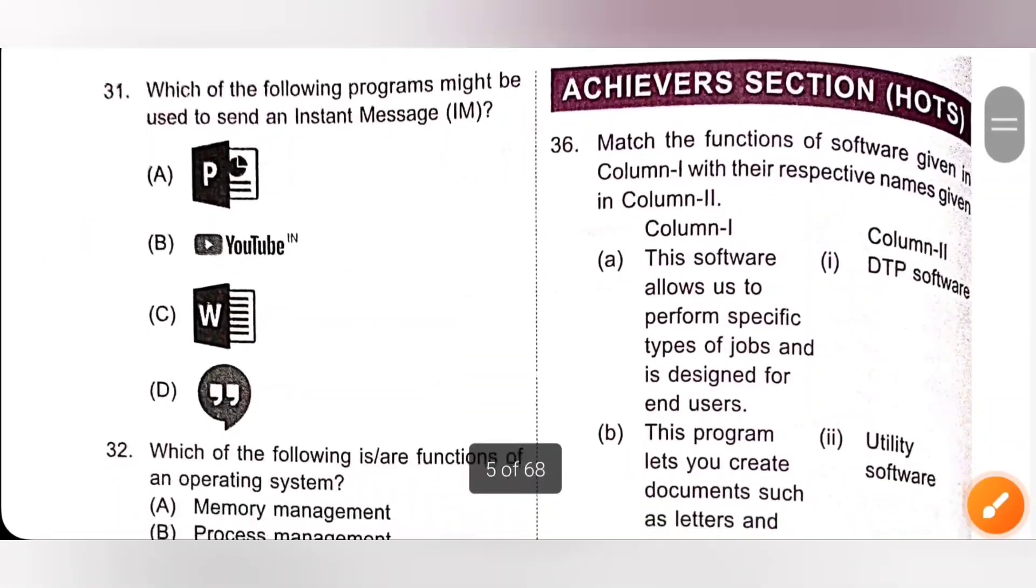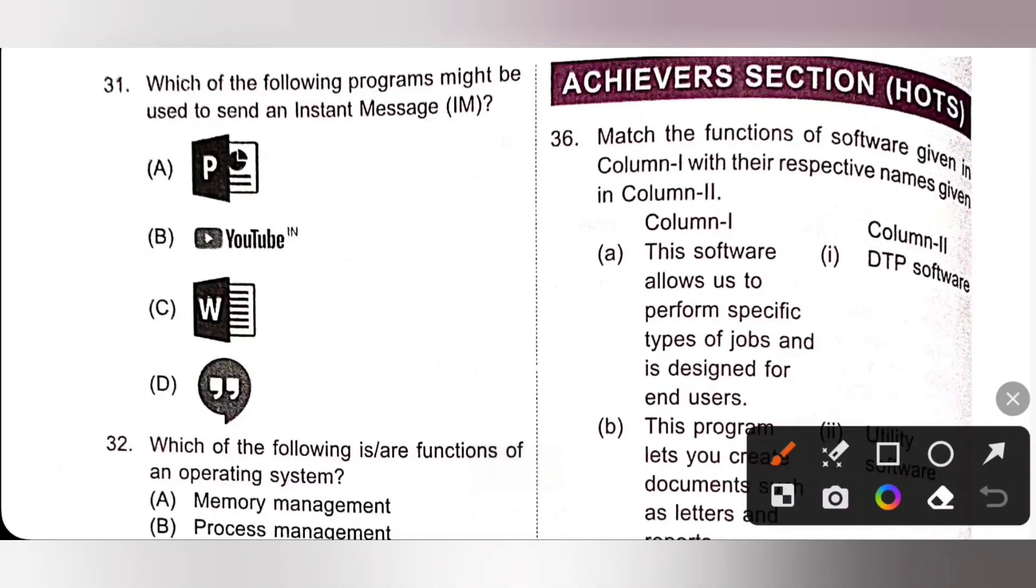Question 31. Which of the following programs might be used to send an instant message? Google Hangout, option D. Google Hangout is used to send instant message. Option D is the correct answer.